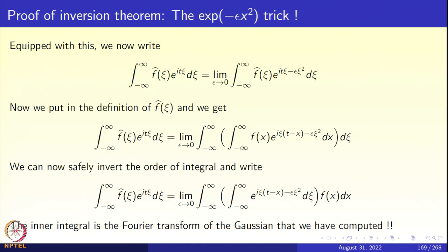To make the computation rigorous, we resort to what is known as the exp(minus ε x squared) trick. We start with the right-hand side of 4.10 and introduce a factor e to the power minus ε χ squared inside the integral, then take the limit as ε goes to 0. That limit can be taken outside the integral because f-hat of χ is a rapidly decreasing function, so the limit can be exchanged with the integral after introducing this e to the power minus ε χ squared.